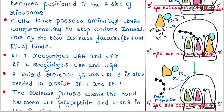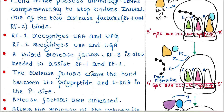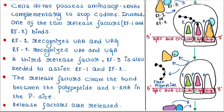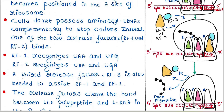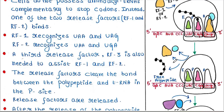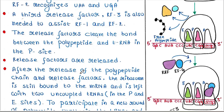These release factors bind at the A site. They cleave the bond between the polypeptide and the tRNA in the P site, and the release factors are then released. RF3, along with RF1 or RF2, dissociate, and the polypeptide chain is now free.